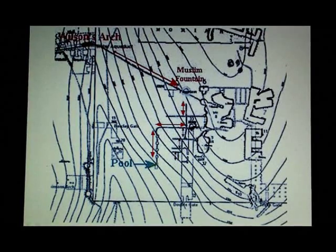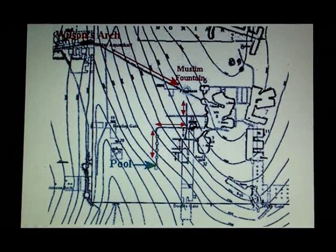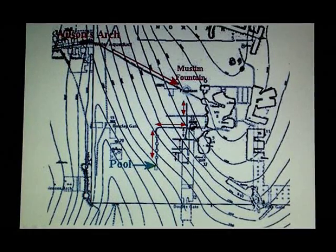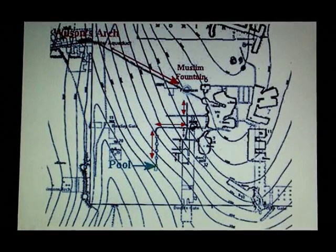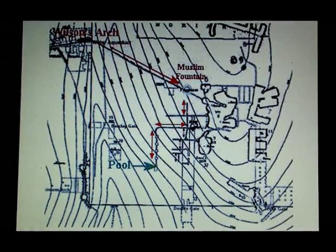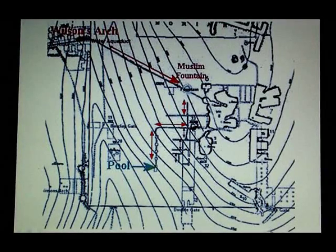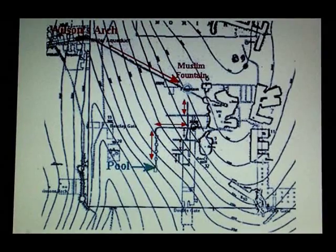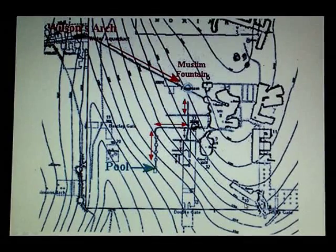This one here would have filled the well of the leaf and from there it would have filled this huge cistern and would have continued down to fill the many baths, the mikvahs down in the southern area and also supplied the water for Solomon's palace which was south of the temple.